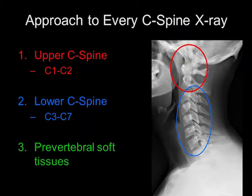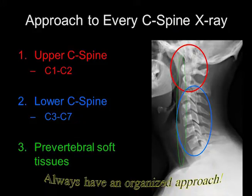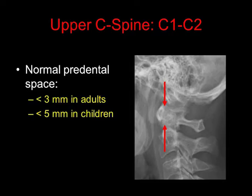And finally, you should pay special attention to the prevertebral soft tissues. Remember to always have an organized approach to every cervical spine x-ray. In terms of the upper cervical spine, it's very important to look at the C1-C2 relationship.